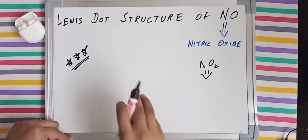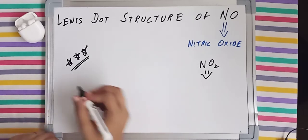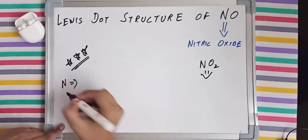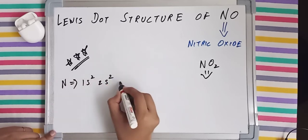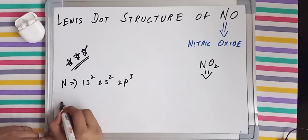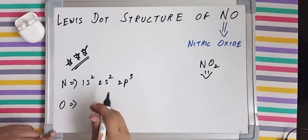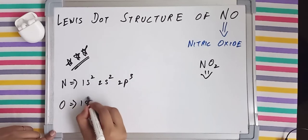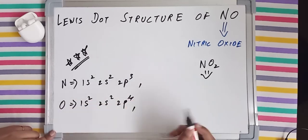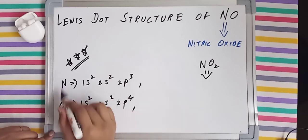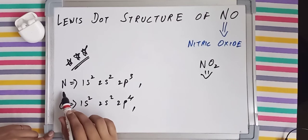Now the electronic configuration of nitrogen is 1s² 2s² 2p³, and the electronic configuration of oxygen, since oxygen is present here, is 1s² 2s² 2p⁴. Now let's count the valence electrons present in these two elements.